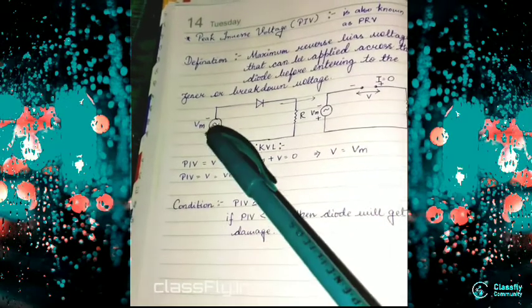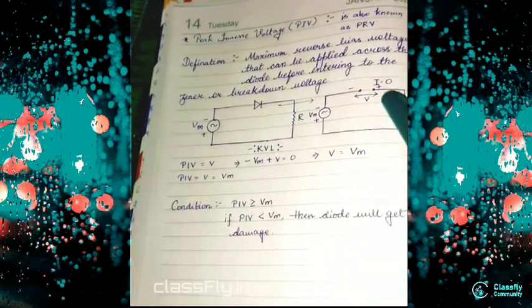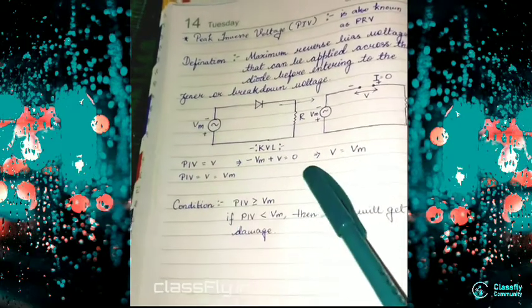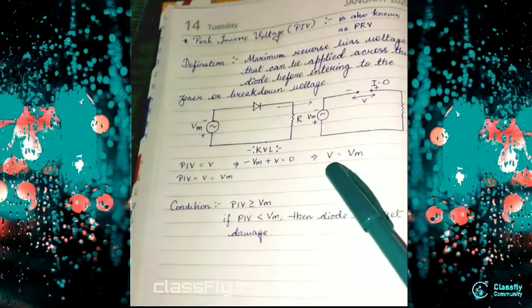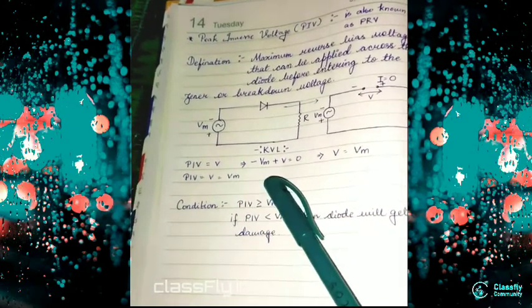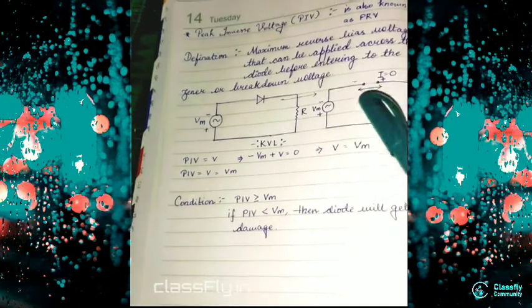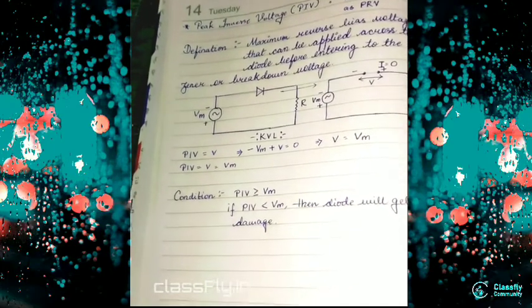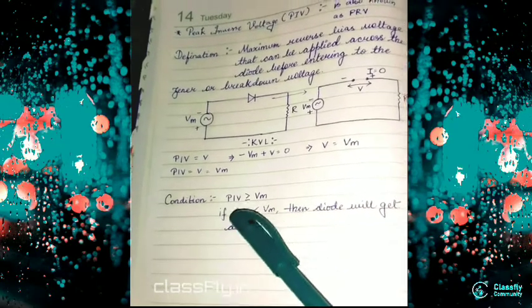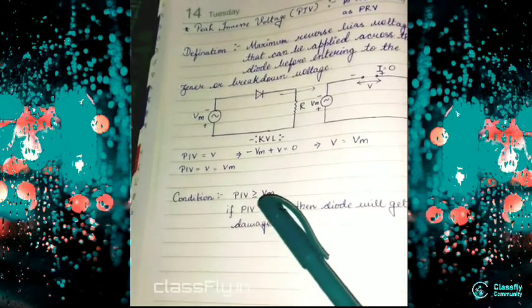PIV is equal to V. This V which we are finding is our PIV. When we solve this equation, we get V = V_m. Therefore, PIV = V_m. But there is a condition for this peak inverse voltage.